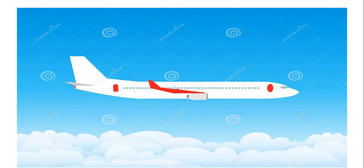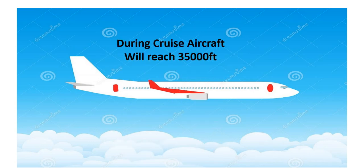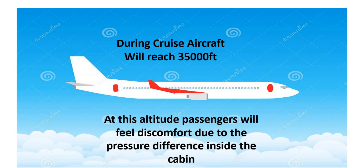The cruise condition is the aircraft flying at a constant velocity at a higher altitude. The altitude may reach 35,000 feet during cruise. At that altitude, passengers feel discomforts such as not being able to breathe properly — breathing trouble — and temperature changes, all happening inside the cabin of the aircraft.